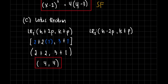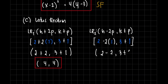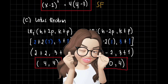For LR₂: h is 2, minus 2p which is 1, comma k is 3 plus p which is 1. Simplifying: 2 minus 2 times 1 equals 0, and 3 plus 1 equals 4. So LR₂ is at (0, 4).